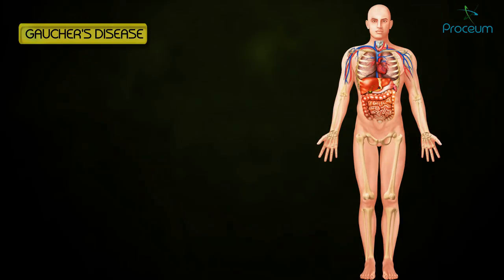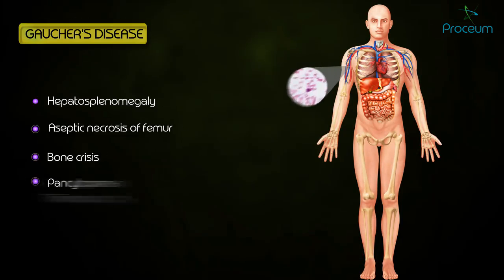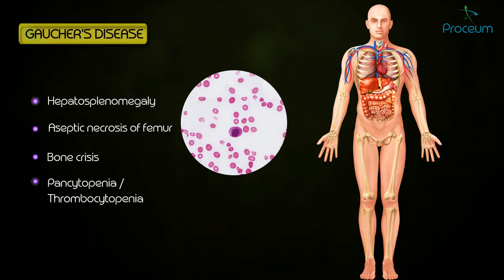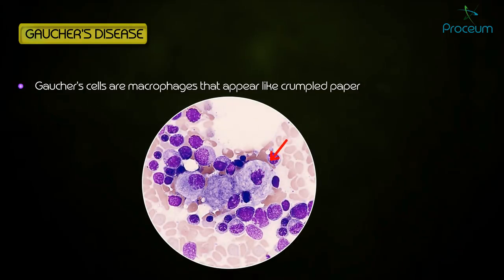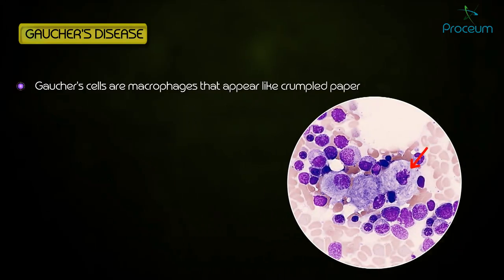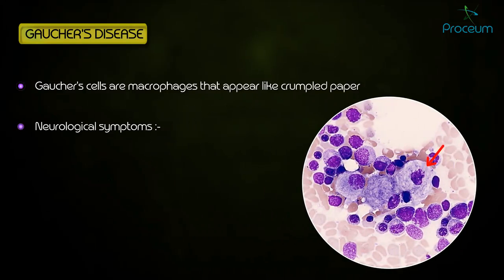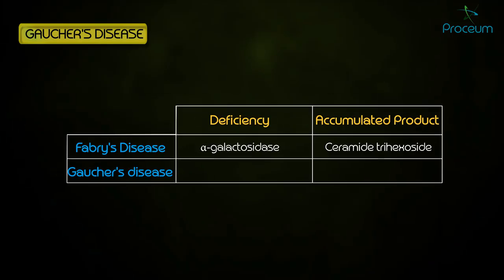Gaucher's disease presents with hepatosplenomegaly, aseptic necrosis of the femur, bone crisis, pancytopenia, and thrombocytopenia. Gaucher's cells are macrophages that appear like crumpled paper. Neurological symptoms occur in less frequent subtypes. Gaucher's disease is caused by a deficiency in beta-glucocerebrosidase, leading to an accumulation of glucocerebroside.